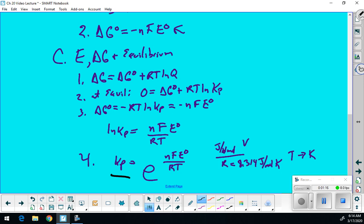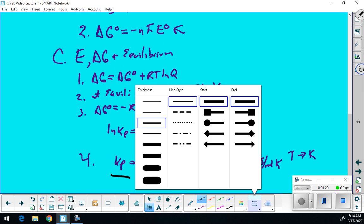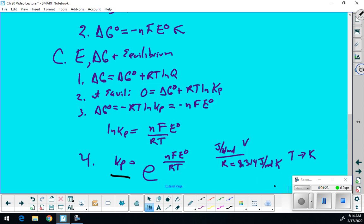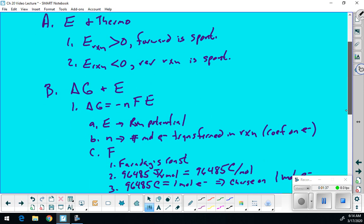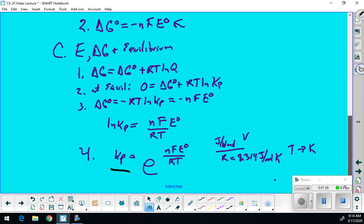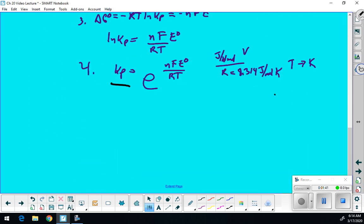And so now we want to take this one step further, and we want to discuss what happens at non-standard conditions, right? Let's take a look at our notes again. Okay, let's go to Roman numeral 5. And so let's talk about E non-standard.